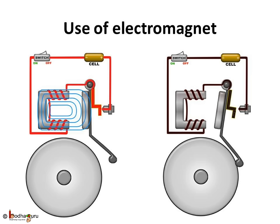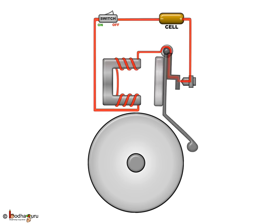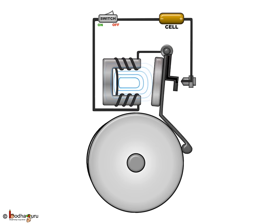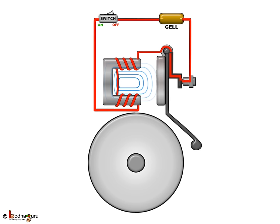Using this electromagnet, we created the movement of the clapper to ring the bell. With the current flow, the electromagnet attracted the clapper, ringing the bell.